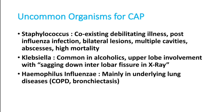Klebsiella pneumonia is very common in alcoholics. It is mainly seen in the upper lobes, and classically the interlobar fissure sags downward — upper lobe pneumonia with a sagging interlobar fissure is a classical feature of Klebsiella pneumonia. Haemophilus influenzae is mainly seen in patients with underlying lung disease like COPD and bronchiectasis.